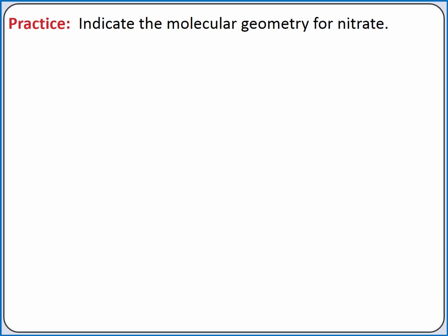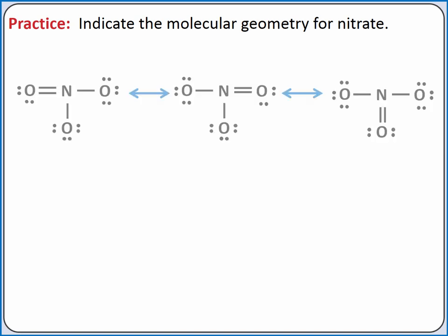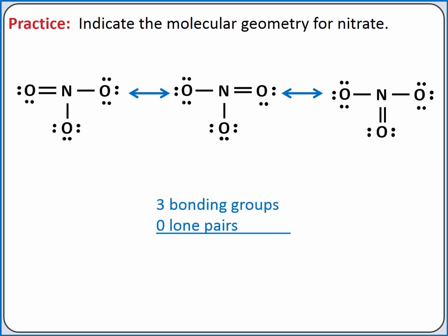Next, let's determine the molecular geometry for nitrate. When we draw the nitrate ion, we have three equivalent resonance structures, so we know the nitrate ion exists as an average of these three structures. All three of these structures have three bonding groups and zero lone pairs, so the molecular geometry of nitrate is trigonal planar.